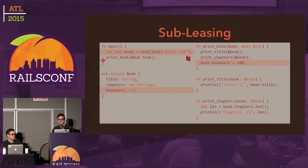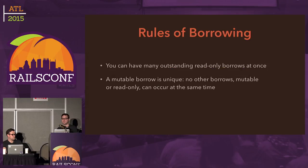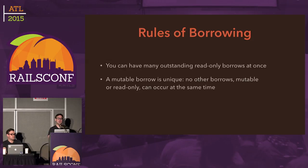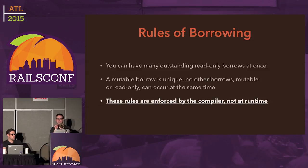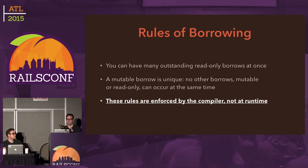To recap, there are basically two rules of borrowing. You can have as many outstanding read-only borrows as you want — as many pointers to the same object as you want. But a mutable borrow is unique — if you have a mutable borrow outstanding, no other borrows, mutable or read-only, can occur at the same time. Importantly, this is not enforced at runtime with locks — it's all enforced by the compiler at compile time.